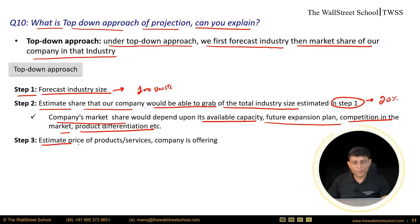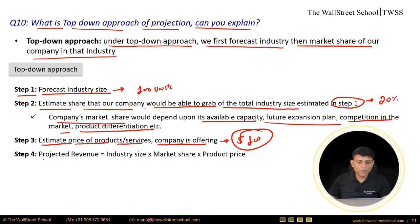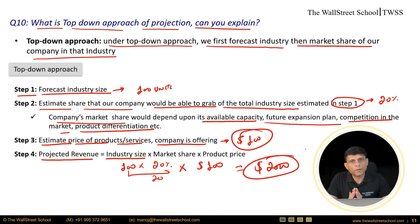Step three: estimate the price of the product or service — assume the company sells at $100 per unit. Step four: projected revenue equals total units sold by the company multiplied by product price — 20 units at $100 equals $2,000 in expected revenue. This is how we estimate revenue under the top-down approach, starting from industry sizing and reaching the company's market share. These are the top 10 questions that can be asked in any investment banking interview.